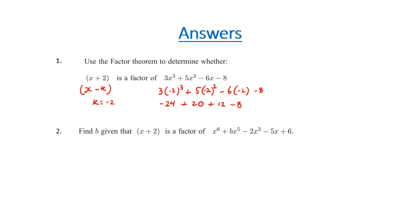This actually equals zero. So yes, x plus two is a factor of 3x³ + 5x² - 6x - 8. And we know this because when I replace all my x values with minus two, we get zero.